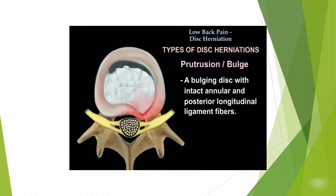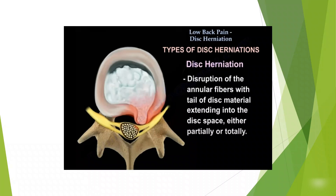What is the most common type of disc herniation? Actually, there are several types. The first is the protrusion or bulge — a bulged disc will have an intact annulus fibrosis. In disc herniation, disruption of the annulus fibers allows the inner soft gelatinous material from the nucleus pulposus to escape into the disc space — that's called disc herniation.